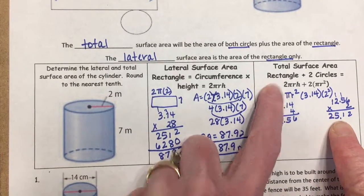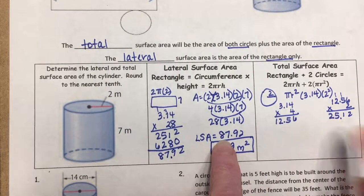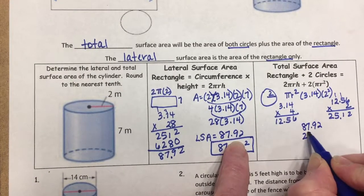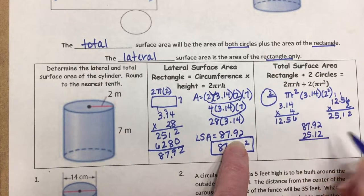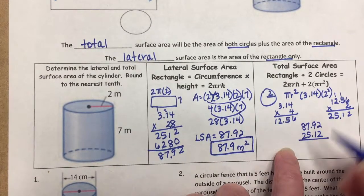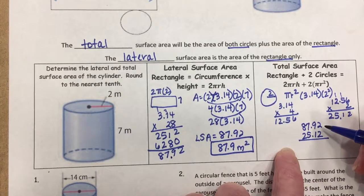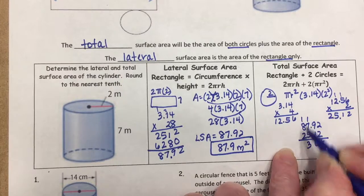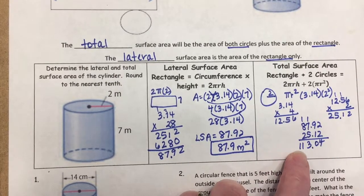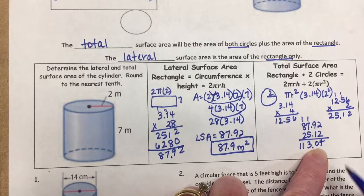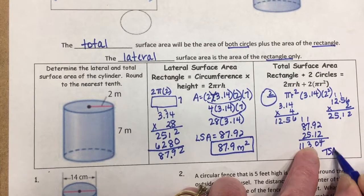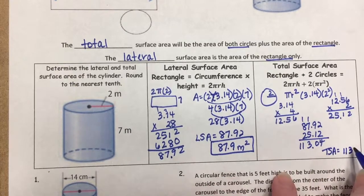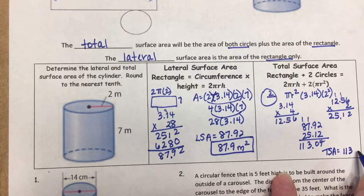Add the two circles (25.12) to the rectangle (87.92), using the unrounded value for accuracy. The total is 113.04, which rounds to 113.0 square meters. It's better not to round until the very end to keep the calculation as accurate as possible.